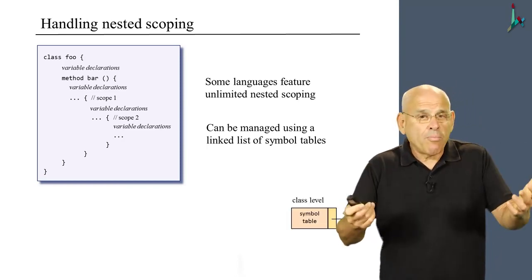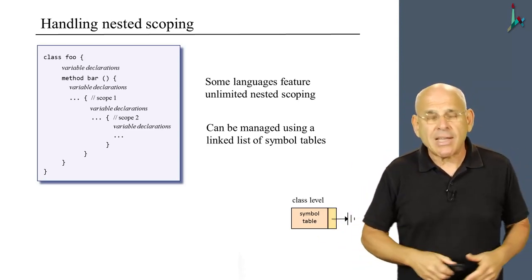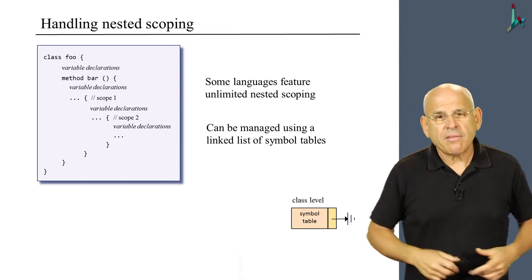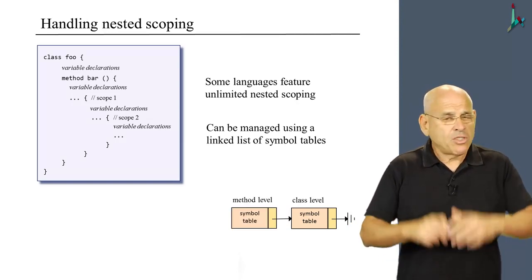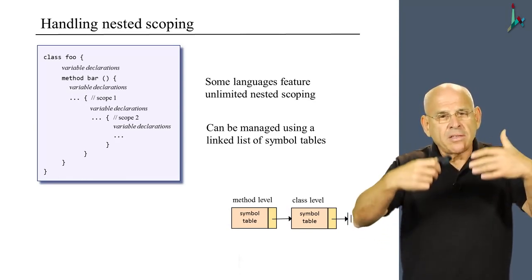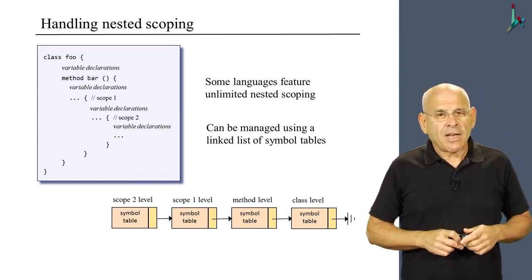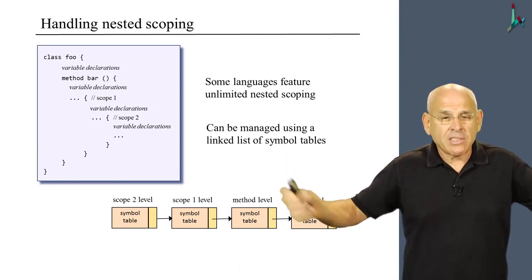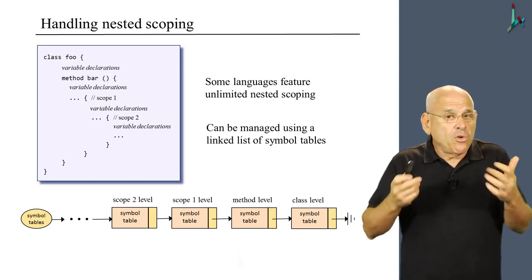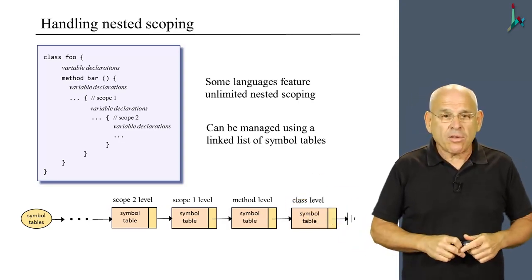When you start compiling the class, you create this linked list. And the first symbol table that you add to the list is the class level symbol table. And then when you start compiling a method you create the method symbol table just like we did previously. And then whenever you have another scoping region, you add another symbol table to this linked list. And at the end, you're going to get a linked list of several such symbol tables. And now the question is, how do you use this linked list when you encounter some variable x in the code? Well, here's what you do.